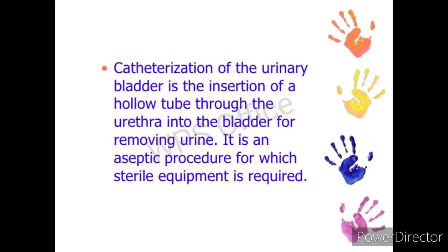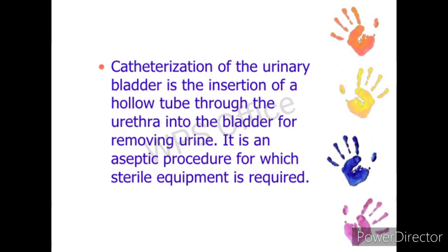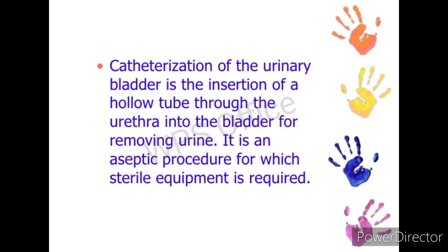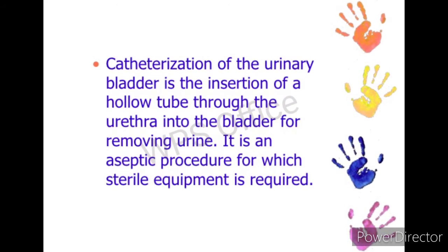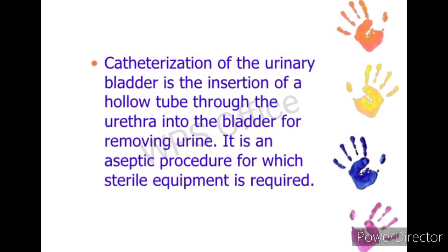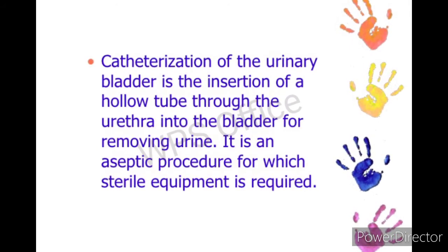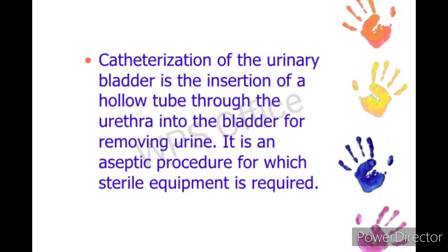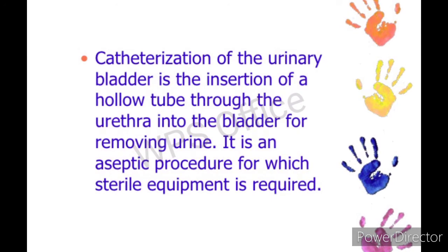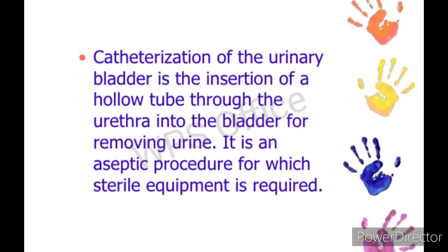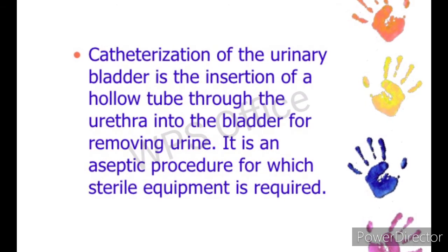Catheterization of the urinary bladder is the insertion of a hollow tube through the urethra for removing urine. When the patient is not able to pass urine or if there is any disorder regarding urinary flow, then urinary catheterization will be done. It is an aseptic procedure for which sterile equipment and sterile technique are required.